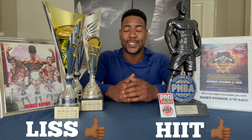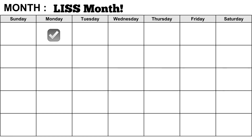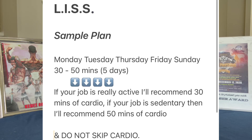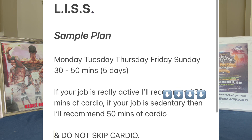You're better off sticking with LISS or HIIT to see your results. Here's a sample protocol you can use to properly structure your cardio throughout the week. For LISS, you'll do Monday, Tuesday, Thursday, Friday, and Sunday — five days of cardio with two days off. If your job is really active, I'll recommend 30 minutes of cardio. If your job is sedentary, I'll recommend closer to 50 minutes. And do not skip cardio — you just won't get the same results.